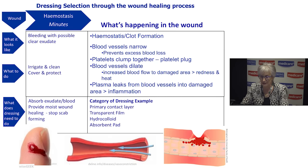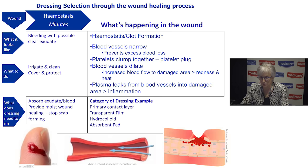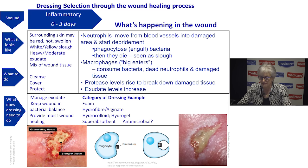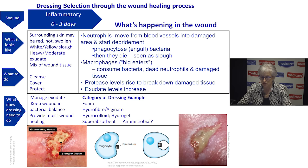This hemostasis phase only takes minutes. Once we have hemostasis, the wound gets into what we call the physiology of wound healing — the inflammatory phase. This is the phase where the wound starts to get cleansed of everything that needs to be removed before healing can really get going. The first cell that comes into the wound at this time is called a neutrophil — a white blood cell that engulfs bacteria through a process known as phagocytosis. Once it has done that job, it dies.